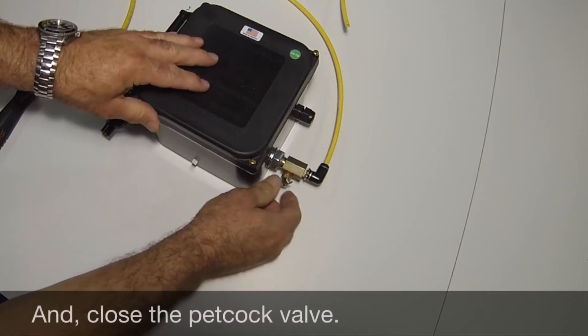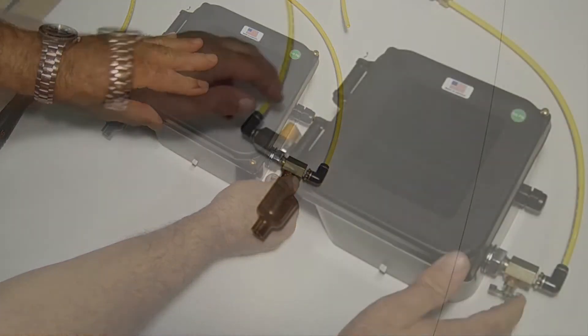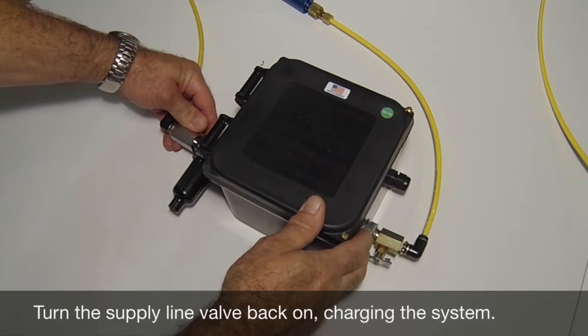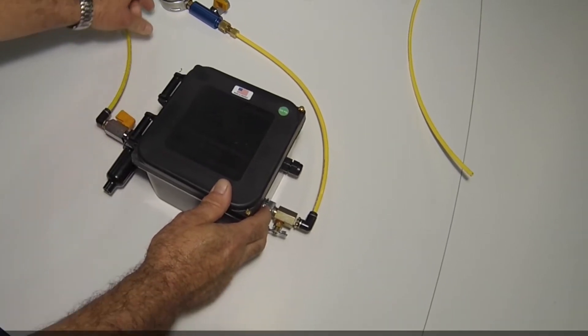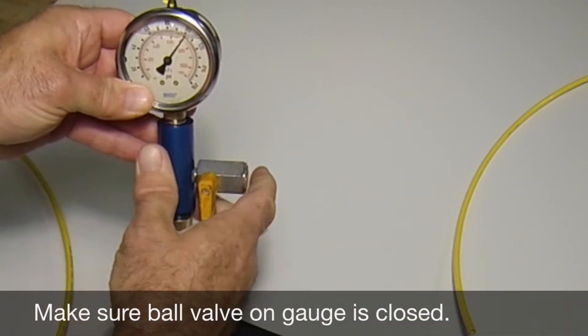After the test gauge has been attached, go ahead and close the petcock valve. Now turn the on-off valve back to the on position, charging the system. Also make sure that the ball valve on the test gauge is closed.